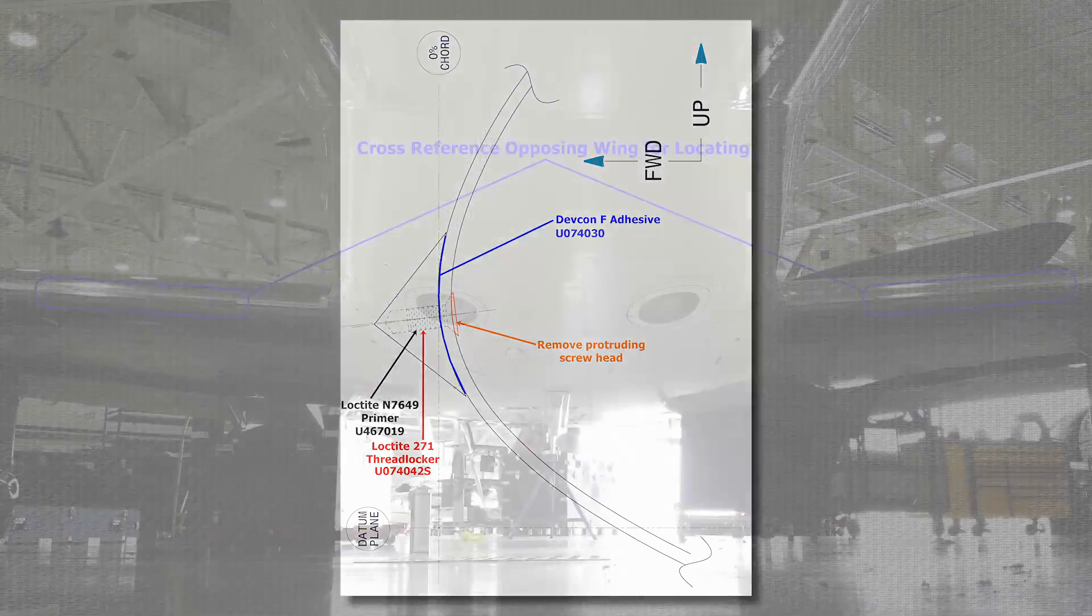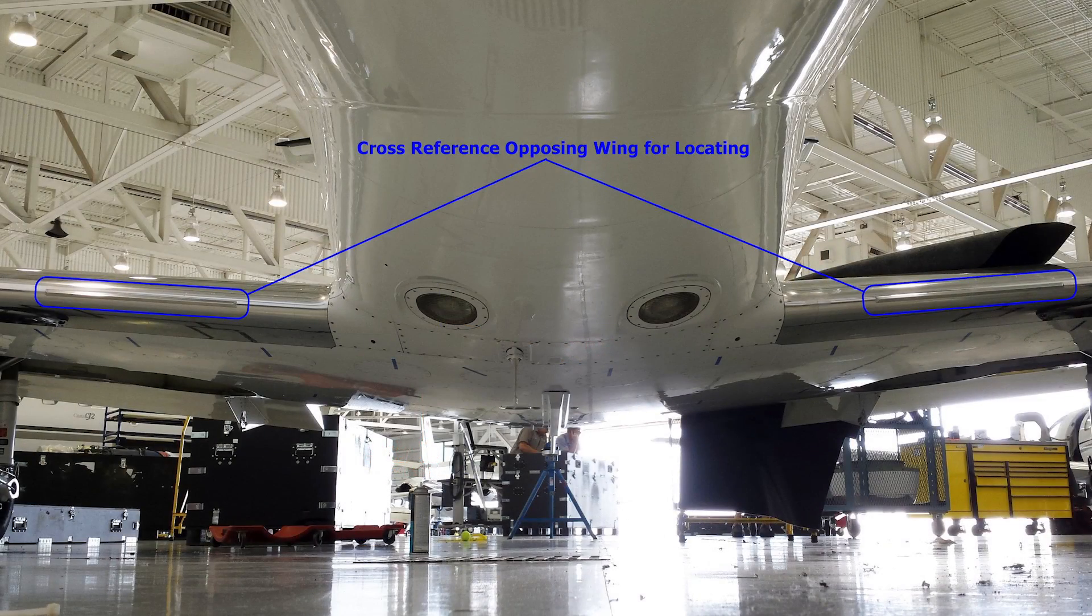Locating the strip on the leading edge can be done by obtaining dimensional data from Team Structures or cross-referencing the opposite wing stall strip installation location as the design left to right is symmetrical.